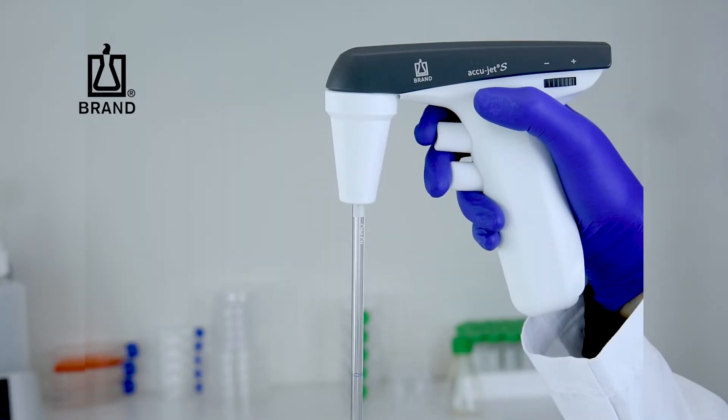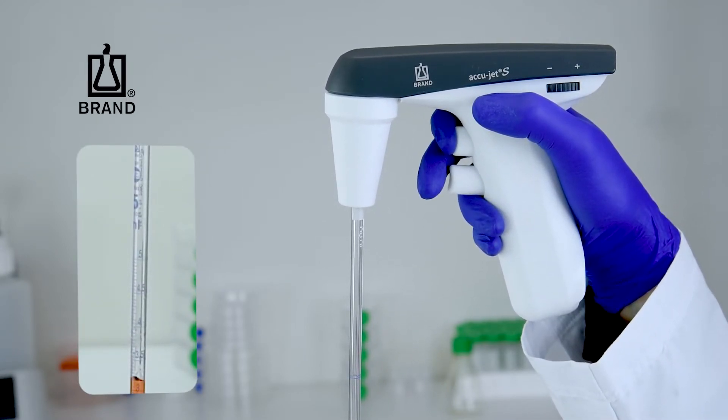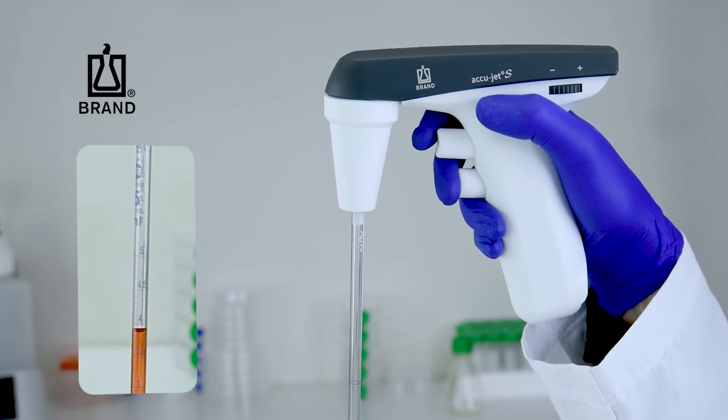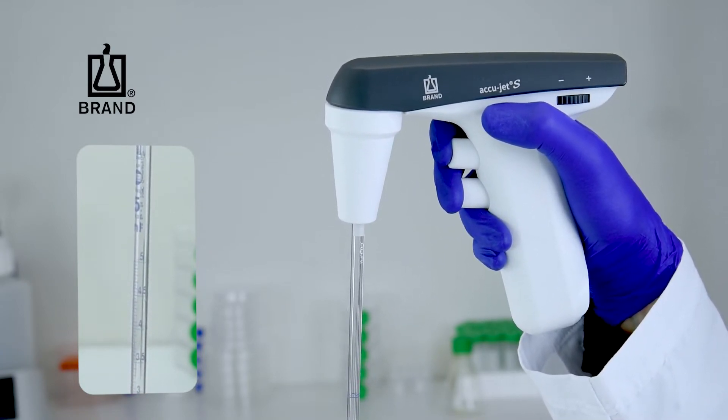Take advantage of the AccuJet S's ability to adjust pipetting speeds on the fly by varying the pressure you put on the pipetting buttons. The more pressure you apply, the faster you will aspirate or dispense the media.